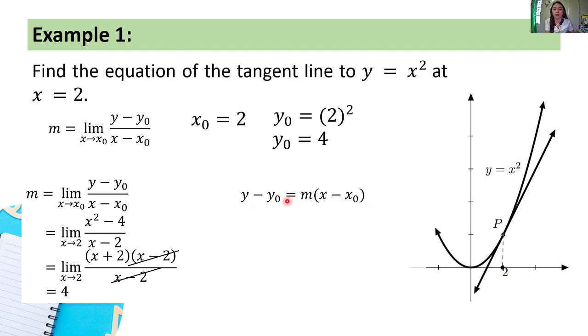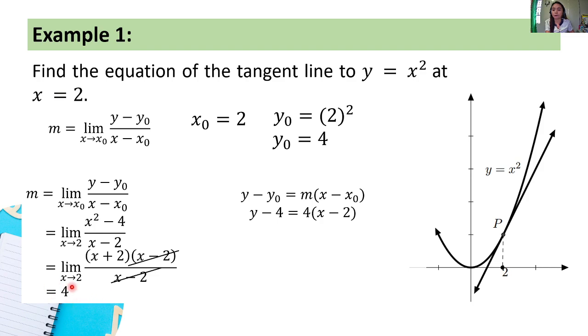So we're going to substitute our given values. We have y minus 4 — since y₀ = 4 — is equal to... the slope we computed was 4.